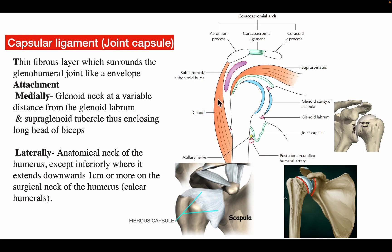The capsular ligament, also known as the joint capsule, is a thin fibrous layer which surrounds the glenohumeral joint like an envelope. Medially it is attached to the glenoid neck at a variable distance from the glenoid labrum and supraglenoid tubercle, thus enclosing the long head of the biceps. Laterally it is attached to the anatomical neck of the humerus, except inferiorly where it extends downwards 1 to 1.5 cm onto the surgical neck of the humerus.